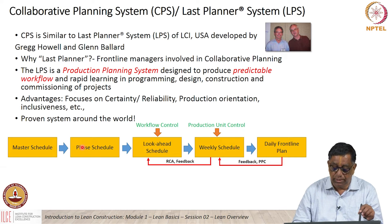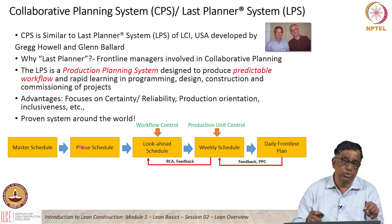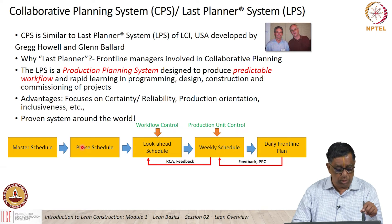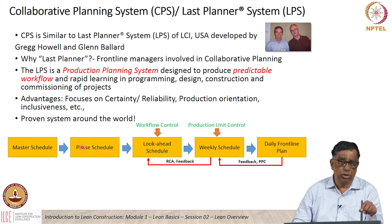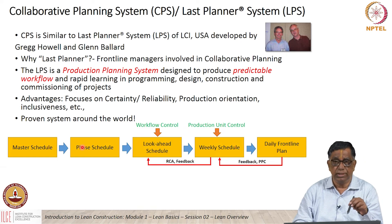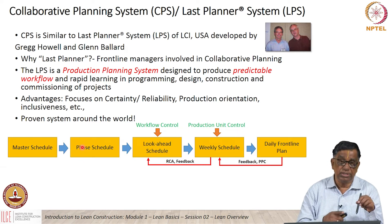CPS focuses on certainty and reliability, a project production orientation, and inclusiveness or collaboration — those are the cornerstones. This system is practiced all over the world, including in India. Conventionally, CPM networks like Primavera or MS Project cover a huge number of activities, the network is prepared much earlier with too much granularity, and the methods are fixed well in advance. The situation can keep changing as the project unfolds.